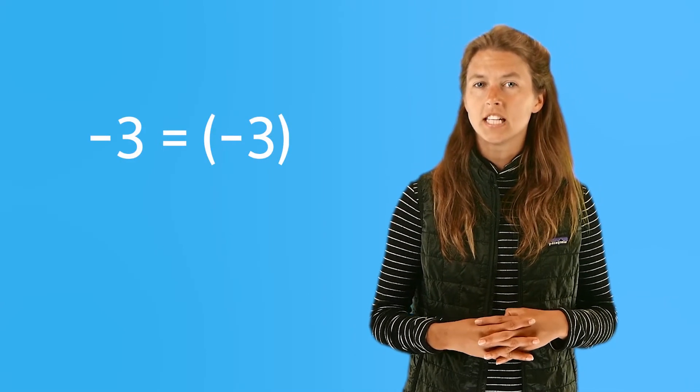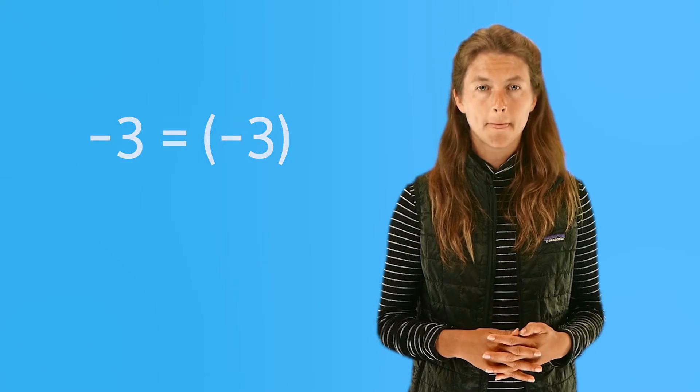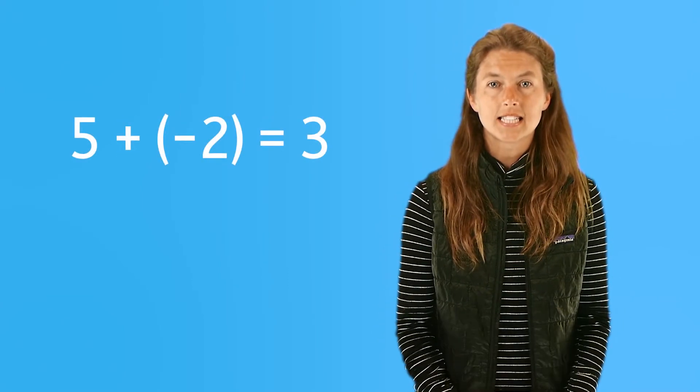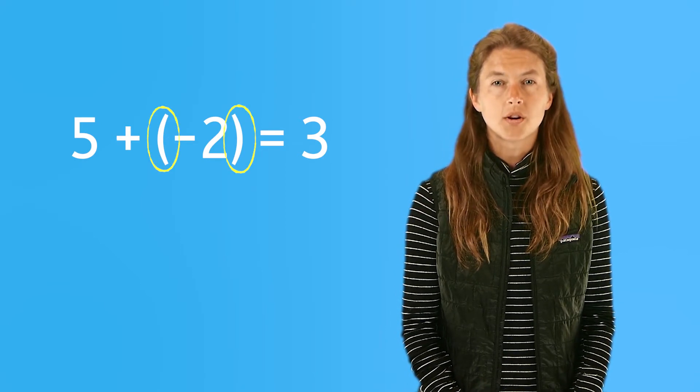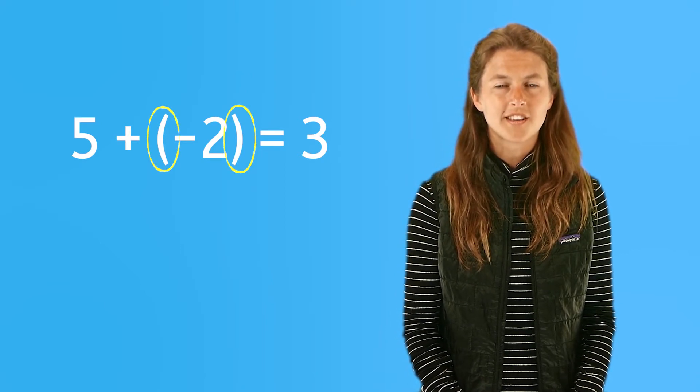When we write negative numbers, we must always use a negative sign to the left of the number like this. Both of these show negative 3. When writing negative numbers in math sentences like addition equations, we also use parentheses to make sure we don't confuse a negative number with subtraction.